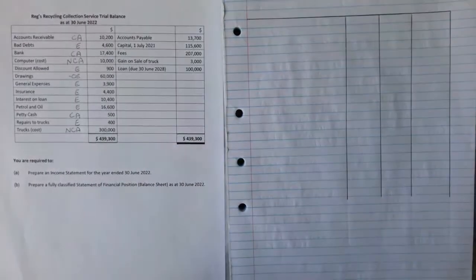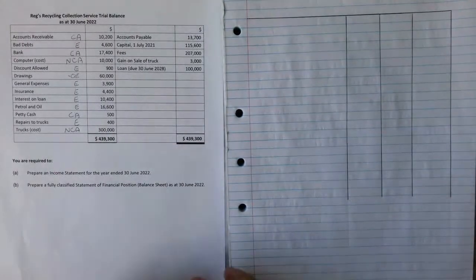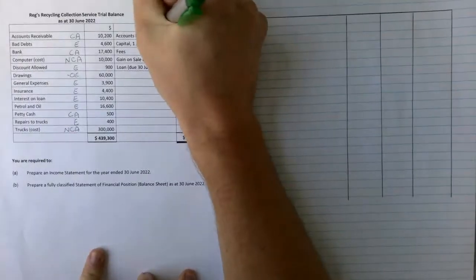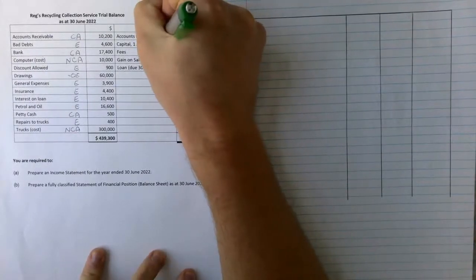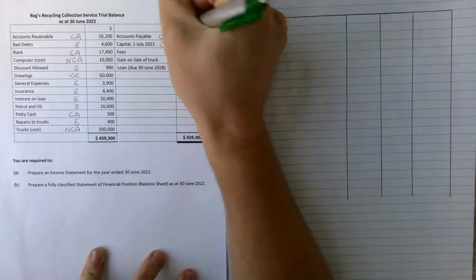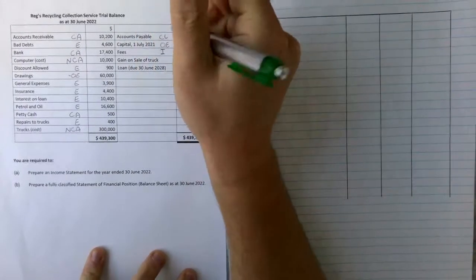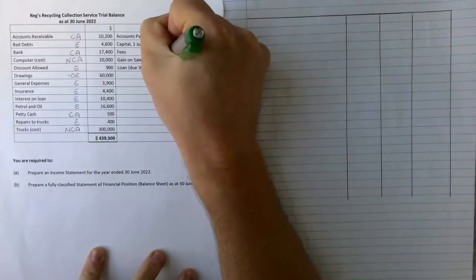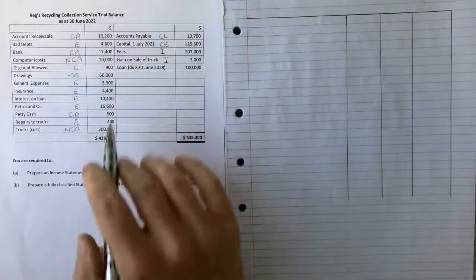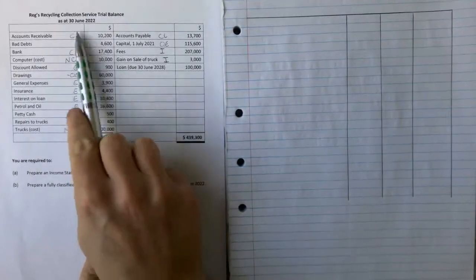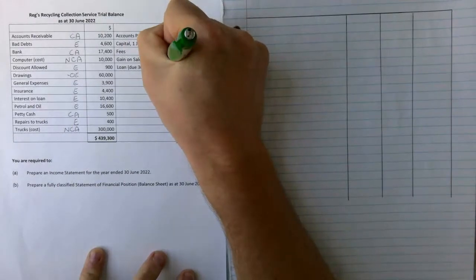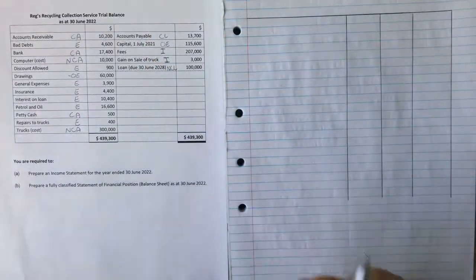Repairs on truck as an expense and our truck itself is a non-current asset. As you can see I've just labeled what each of those are because it makes it easier moving forward.